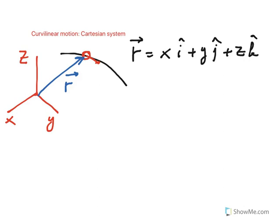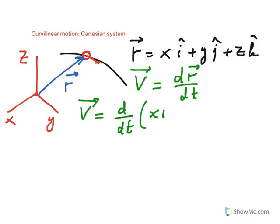Now, let's go ahead and define velocity. Velocity is defined as rate of change of this position vector, dr/dt. So, if you go ahead and take the derivative of r, which is x i, plus y j, plus z k.